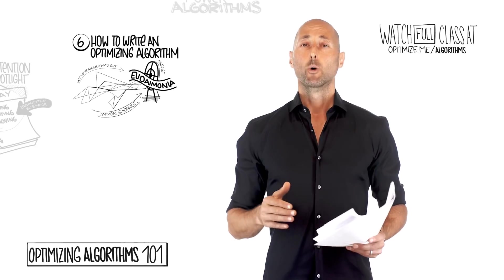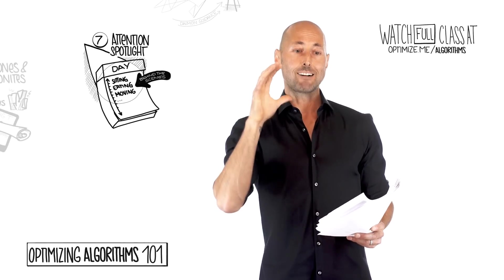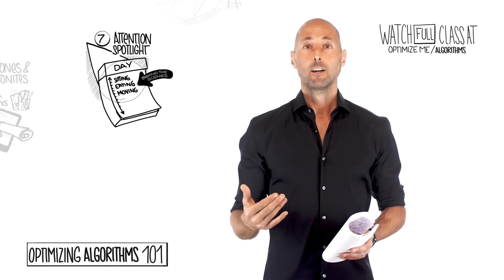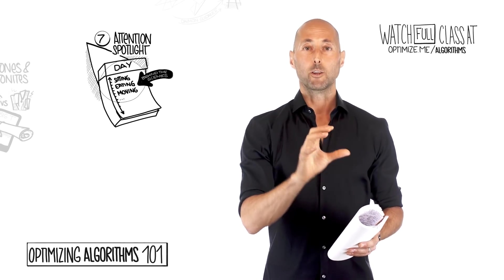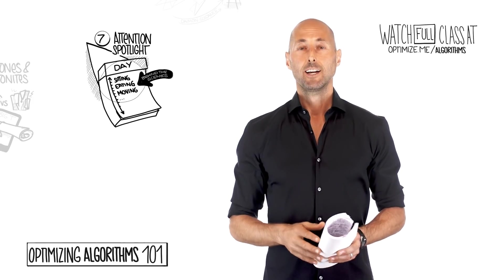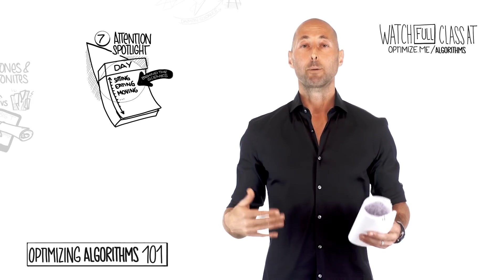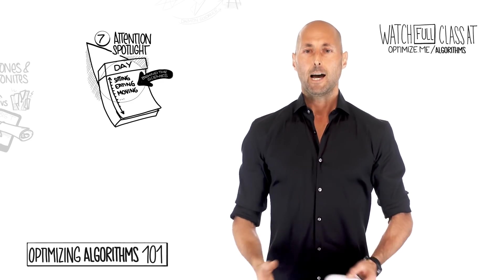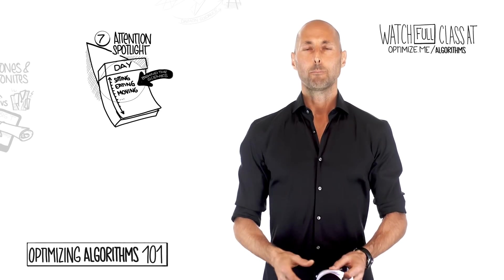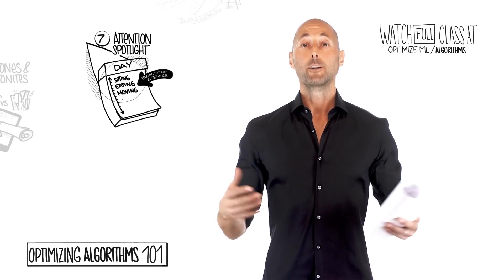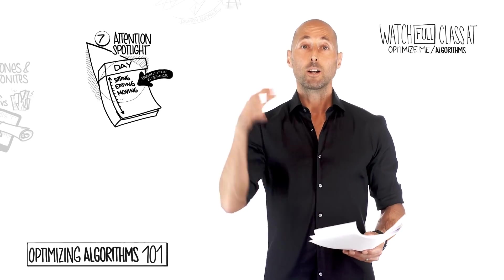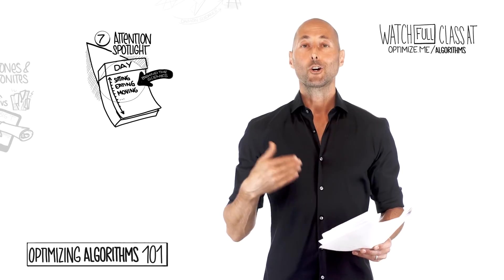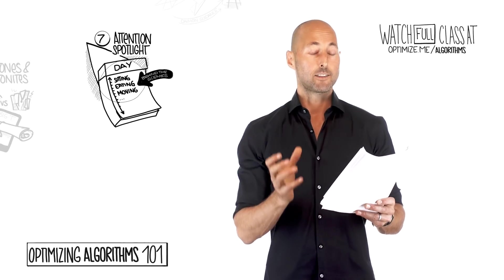And then our seventh big idea, we're going to revisit the attention spotlight that we're putting on your algorithms. And we're going to start to go through our days and see the meta opportunities to write algorithms and the little micro opportunities. Every single moment affords you an opportunity to write a better algorithm. We're not going to go crazy about it. We want to have fun looking at it and saying, okay, how is my sitting algorithm?